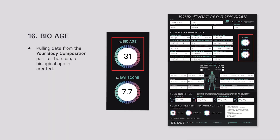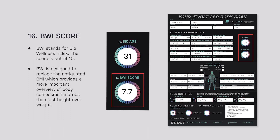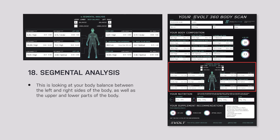Next we have biological age. That's pulling data from the composition part of the scan — looking at your hydration status, internal body fat levels, external body fat levels, and muscle mass — to give you an internal biological age to compare with your physical age. Then we have our BWI score, which is the Bio Wellness Index — an overall score out of 10 based on the same data.